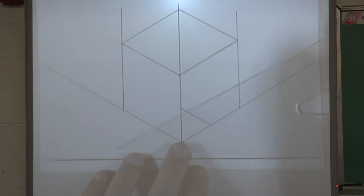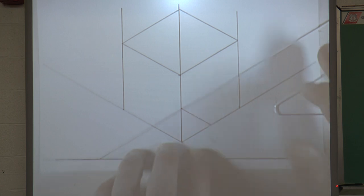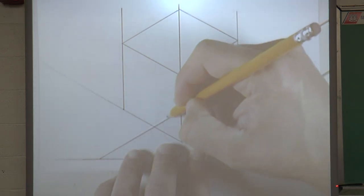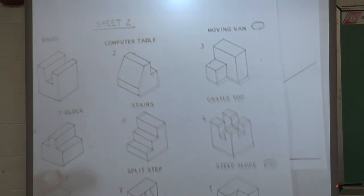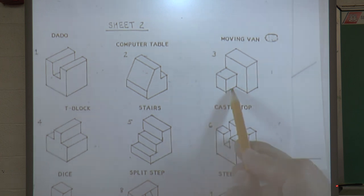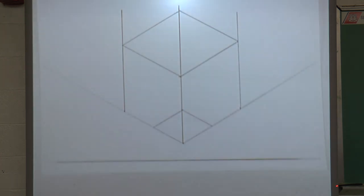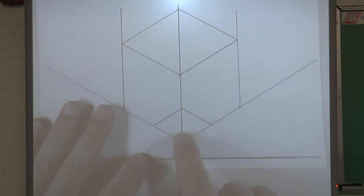Flip my triangle over. Take this line, bring it down. What I did was I just created the front of the moving van. Actually, these two lines right here, this line and this line. I'm now going to erase what I don't need.